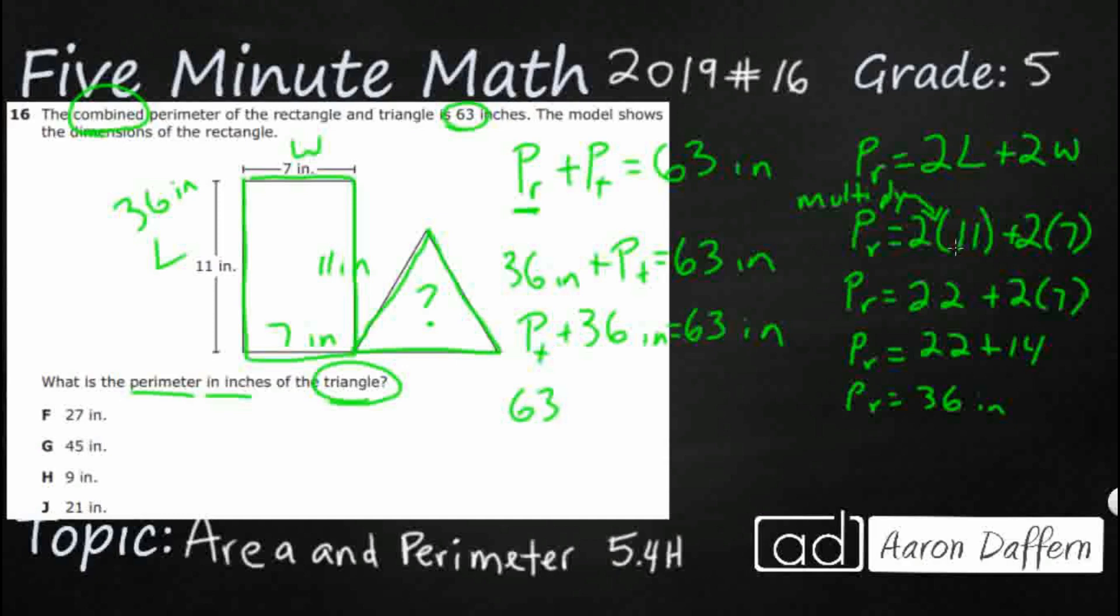But remember when we're dealing with fact families, we also have two different subtraction ones. So we've got 63 inches minus, and then you have one of the addends, P sub T equals 36. Doesn't really help us. But look at this one right here, 63 inches minus 36 inches. There we go. That fact family number sentence helps us.